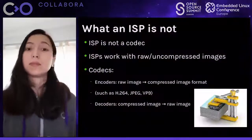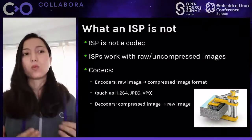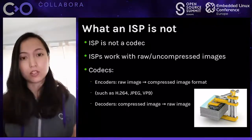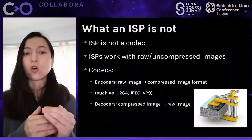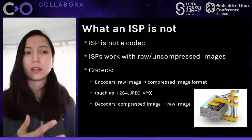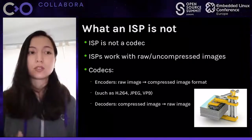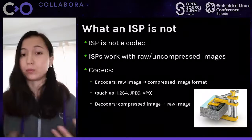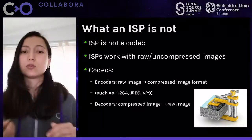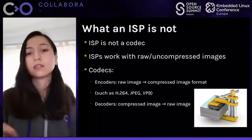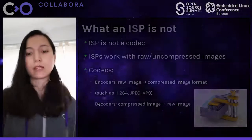An ISP is not a codec. ISPs work with raw and uncompressed images, while codecs can be divided into encoders, which transform raw images into compressed formats such as H.264, JPEG, or VP9, and decoders, which do the opposite — transforming compressed images back into raw images.